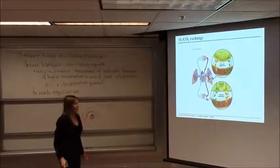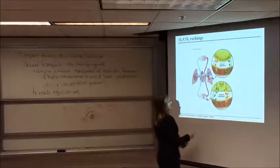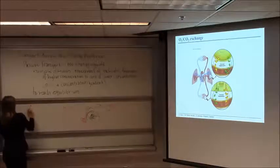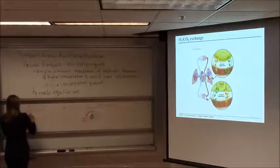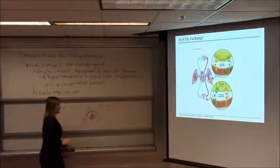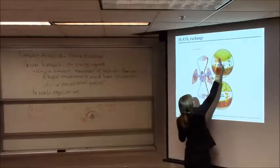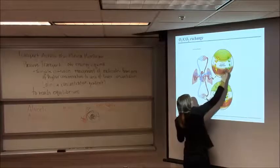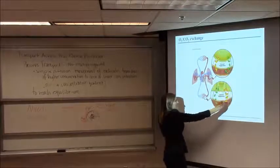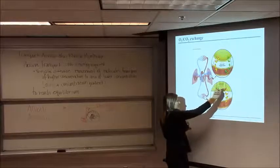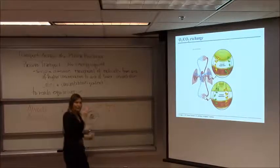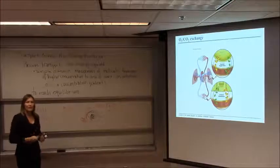At the air sac of the lungs — called alveoli, singular alveolus — it's high in oxygen and low in CO2. Red blood cells pick up oxygen and drop off carbon dioxide there, then go back down to the body cells where they do the opposite: pick up CO2 and drop off oxygen. This cycle keeps going as long as you're alive. Simple diffusion, no energy required.